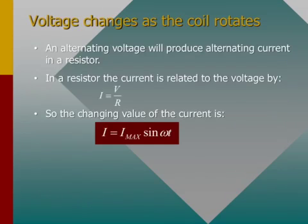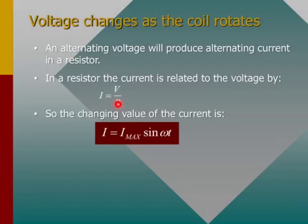An alternating voltage will produce alternating current in the resistor. In the resistor, the current is simply V over R. So the change in value of the current is I equal to I_max times sine omega t.